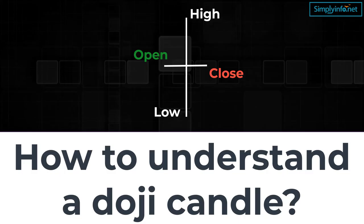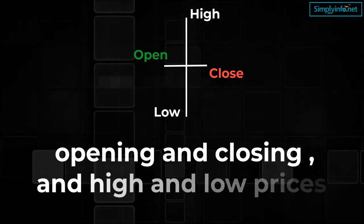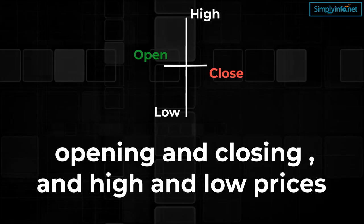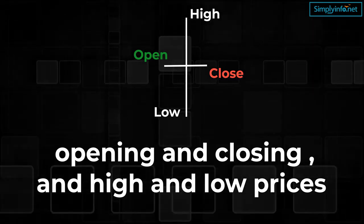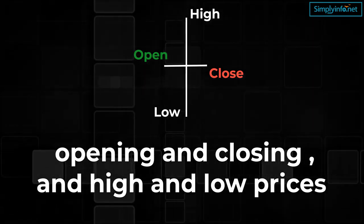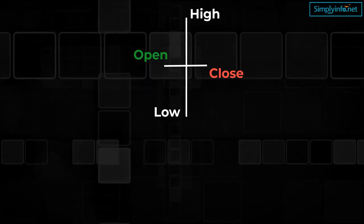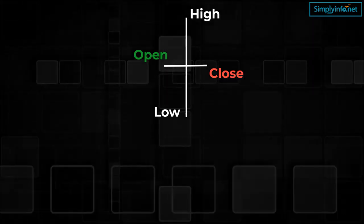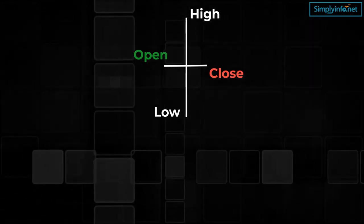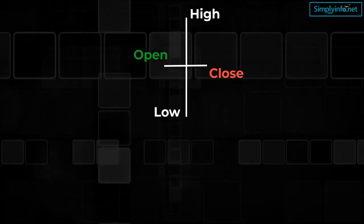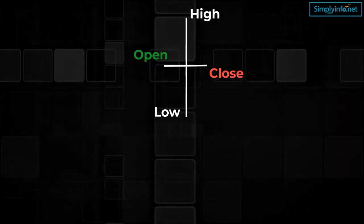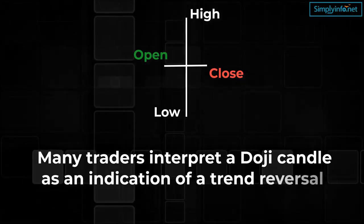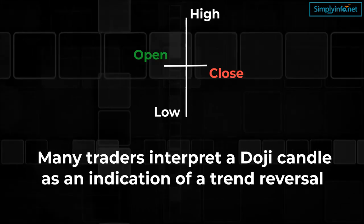How to understand a doji candle? Each candlestick has four parts: an opening, a closing, and the high and low prices of the day. By looking at it, we get an idea about the price movement of an asset. The opening and closing prices together create a thick section called the body. The higher the difference between the opening and closing prices, the longer will be the real body of the candle. On either side, the highest and lowest prices of the stock create shadows or wicks. Many traders interpret a doji candle as an indication of a trend reversal.